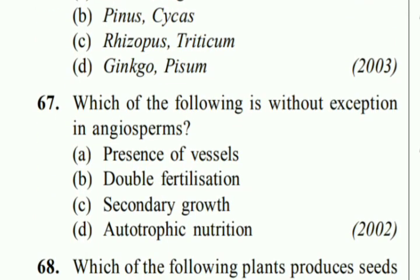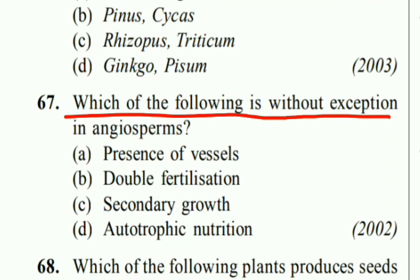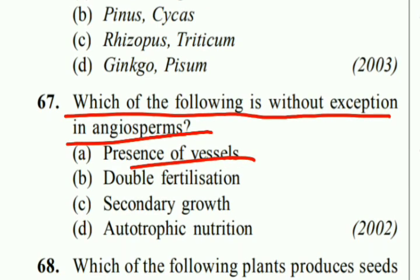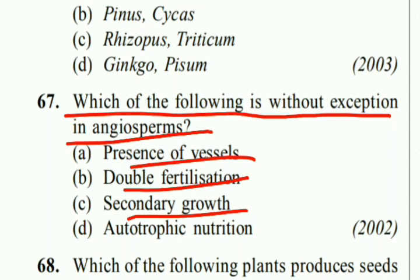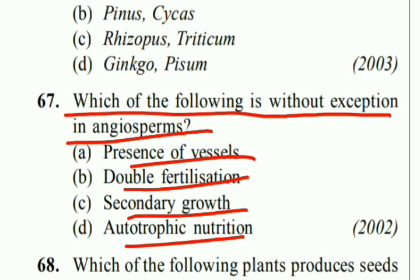Which of the following is without exception in angiosperms: presence of vessels, double fertilization, secondary growth, or autotrophic nutrition? Right answer is B: double fertilization.